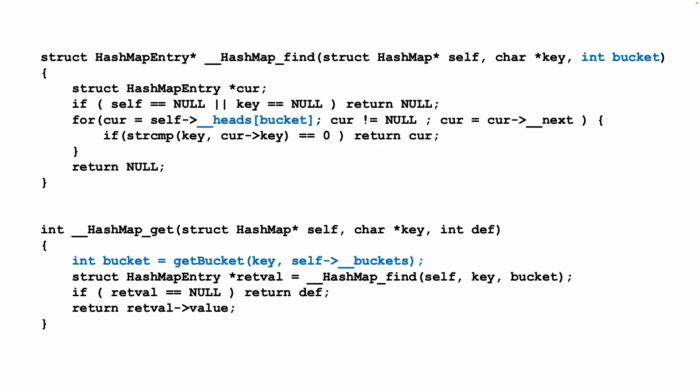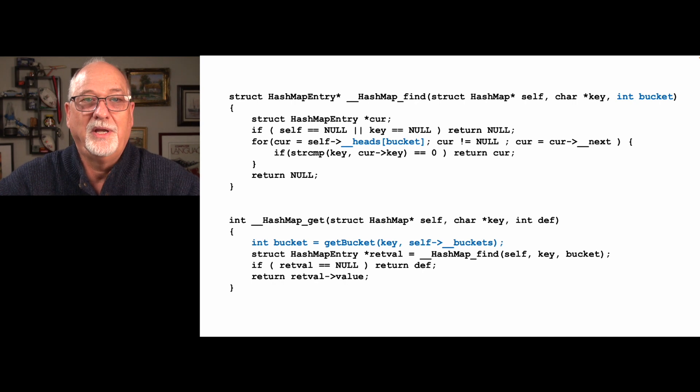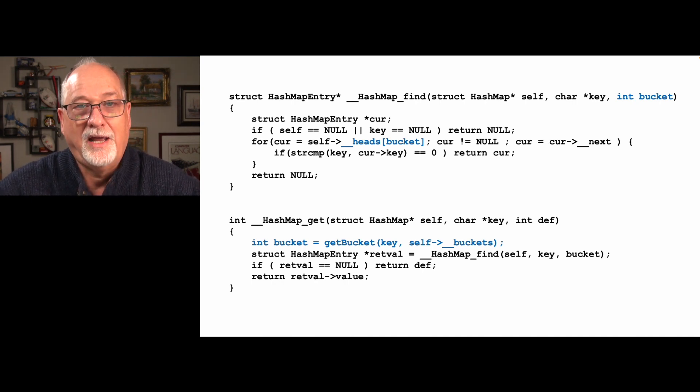If we look at HashMapGet, which takes a key, a default, and self, we say: compute the bucket from the key modulo however many buckets we have, which in this case might be eight. Then we do a struct HashMap star retval, go find it passing in the bucket. If the return is null from find, we return the default, otherwise return the value. There's one line changed between the code from ListMapGet to HashMapGet.